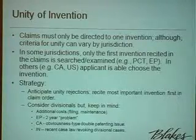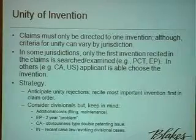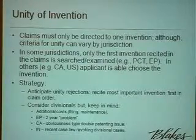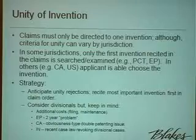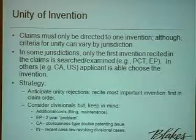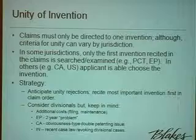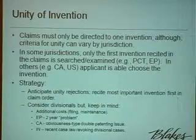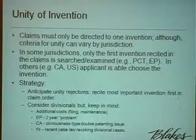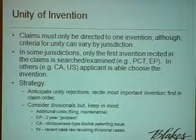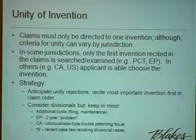In other jurisdictions, like PCT and Europe, if a unity issue is faced, the examiners look at the first invention recited in the claims. Especially in a PCT case, unfortunately, the only way to deal with that issue at the search level is to pay the additional search fees if you want second or third inventions to be searched as well. So it does get potentially expensive.